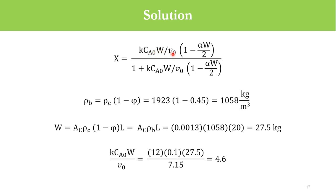Starting from this equation: X equals kCA0W/V0 times (1 - αW/2) divided by 1 plus kCA0W/V0 times (1 - αW/2). We derived this equation in our previous lecture 29.